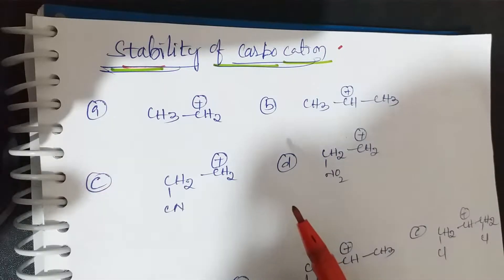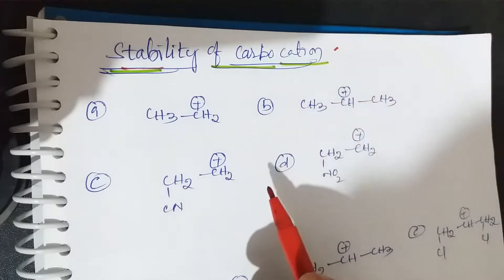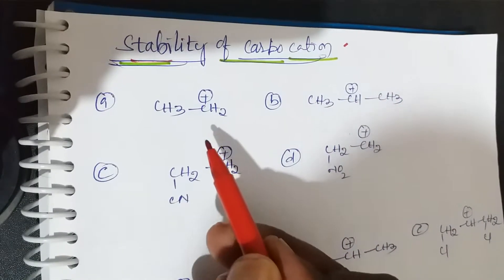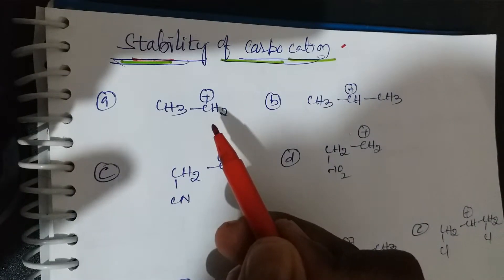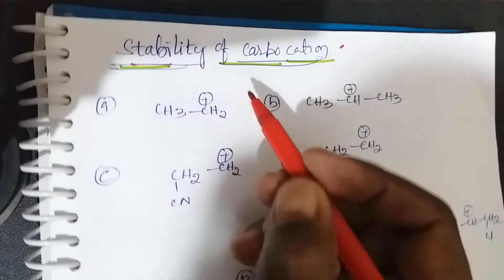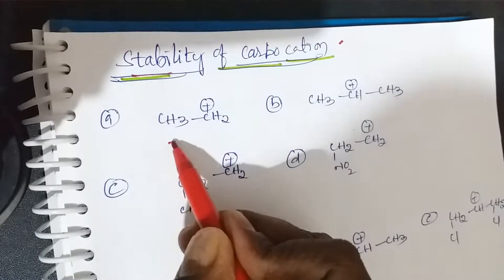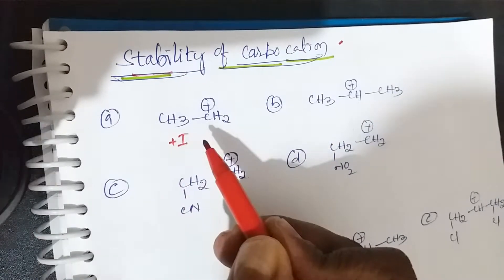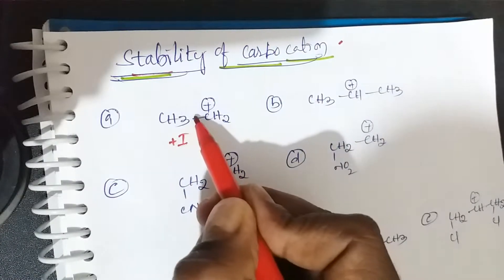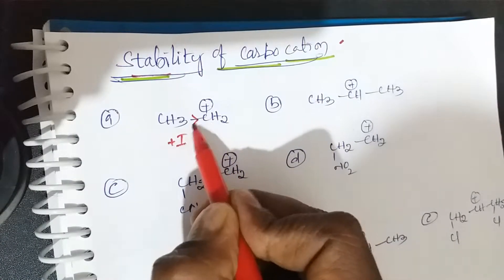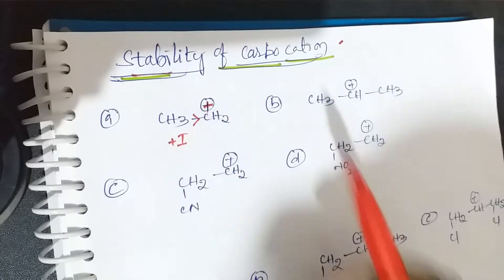For carbocation stability, the positive charge should be less on carbon — that is the more stable carbocation. Here the first one is CH3-CH2+. The role of CH3 is the plus I effect, which is an electron releasing group. So here the positive charge is slightly decreased.